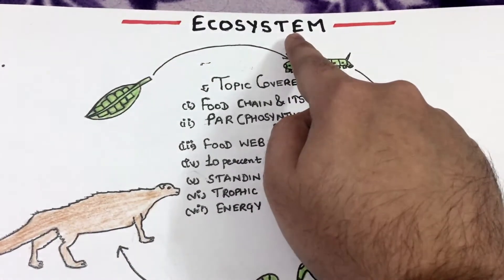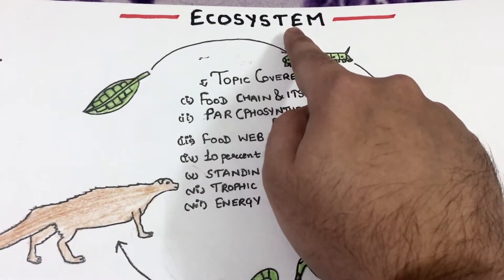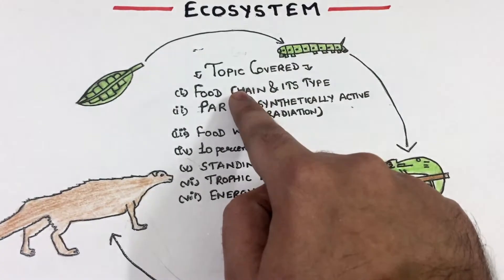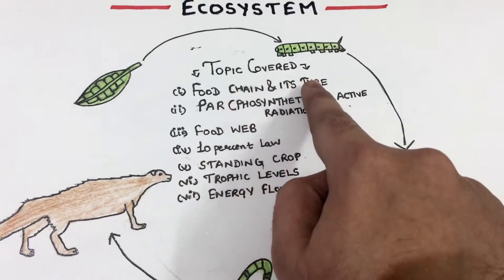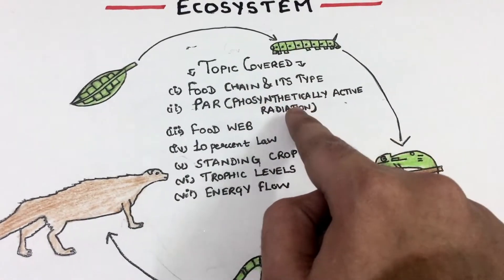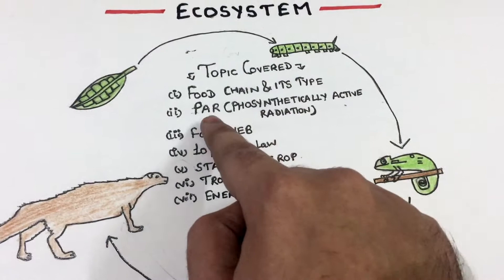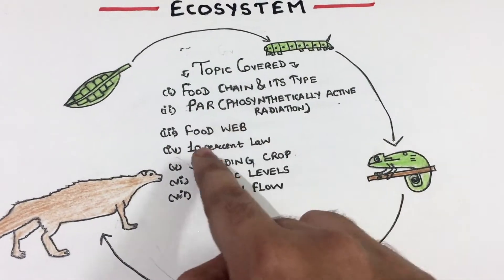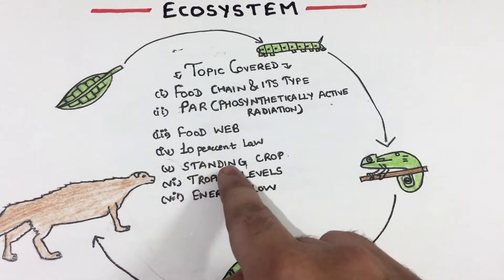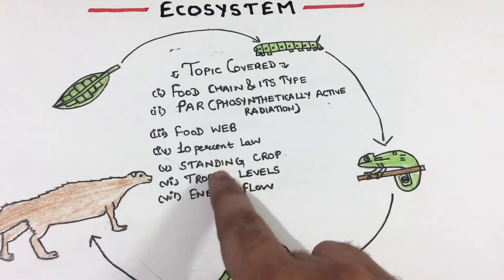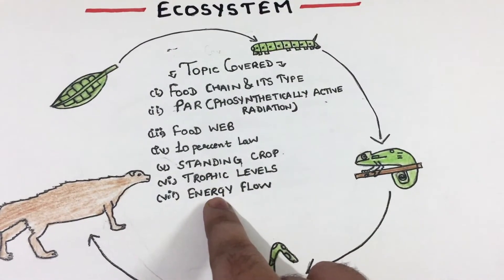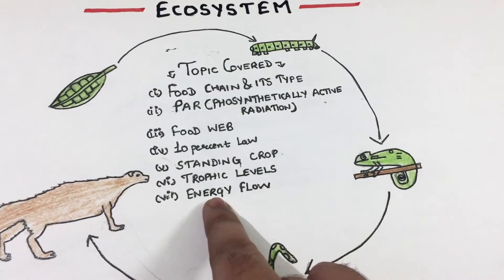Hello students. This is the fifth video on ecosystem. Topics covered in this video are food chain and types of food chain, photosynthetically active radiation, food web, 10% law of ecosystem, standing crop, trophic levels, and energy flow. So let's start.